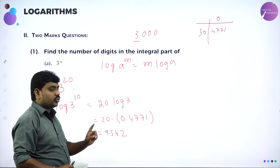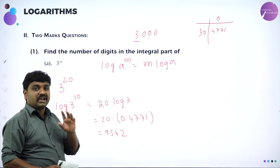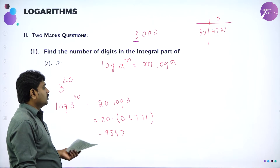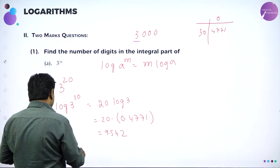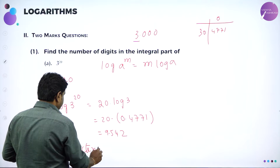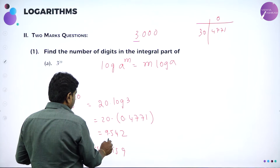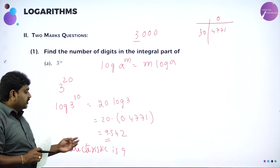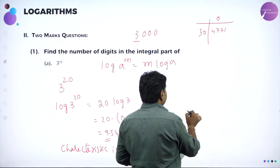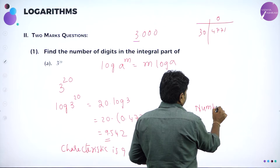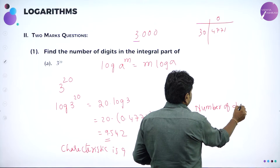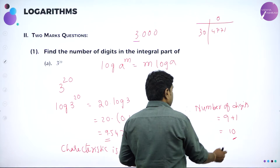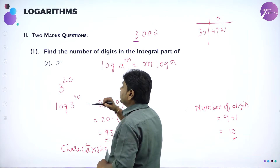Log of 3^20 = 9.542. Before the decimal, the characteristic is 9. Since number of digits = characteristic + 1, the number of digits in the integral part of 3^20 is 9 + 1 = 10 digits.